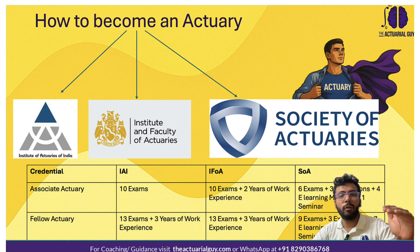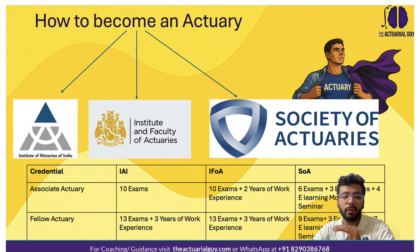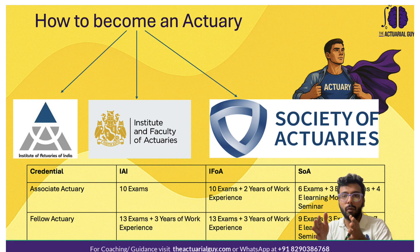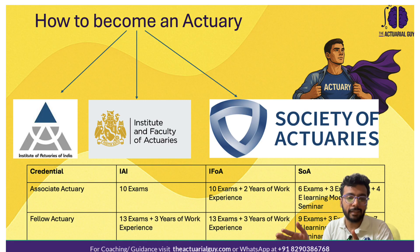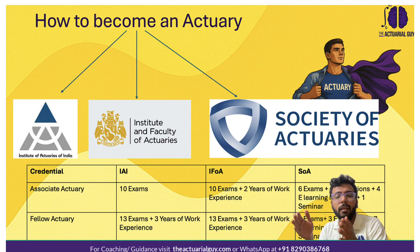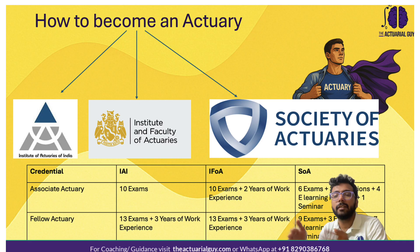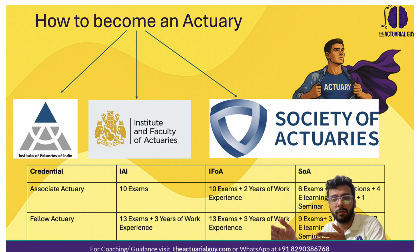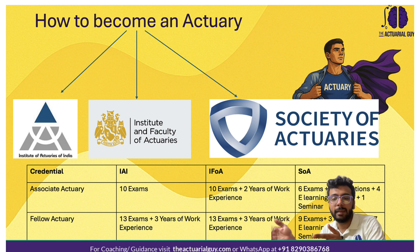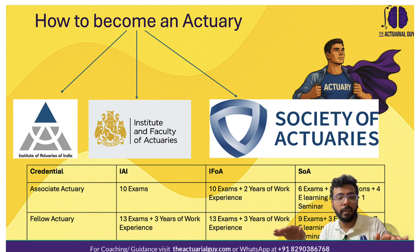When we talk about the actuarial qualification, there are two levels you are trying to reach. The first intermediate qualification is that of an associate actuary. If qualifying from IA, that means passing the first 10 exams — the core principles and core practices exams. With IFOA, that means the same 10 exams plus two years of work experience. With SOA, it's slightly more complicated: you need six exams, three exemptions based on university modules, four e-learning modules, and one seminar to become an associate actuary.